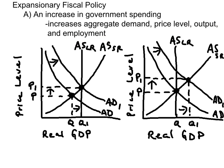Ideally, the government should pursue an expansionary policy when the economy is in recession. The increase in government spending will shift aggregate demand to the right and bring about full employment. If the economy is already fully employed, the increase in government spending will cause inflation.